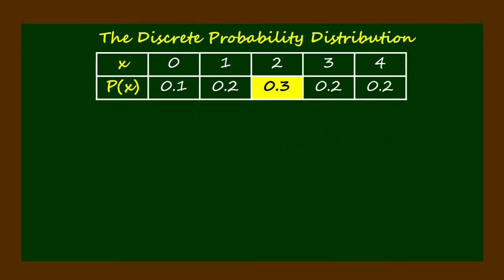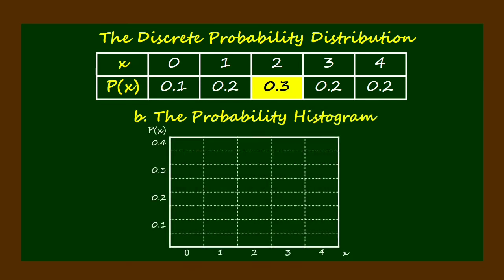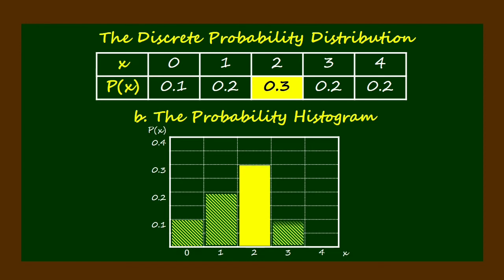After getting the value of the missing probability P(2), the discrete probability distribution table is now complete. Then finally, we can construct the probability histogram. That concludes the completion of solution requirements for example 4.